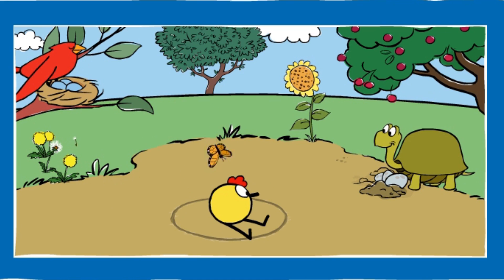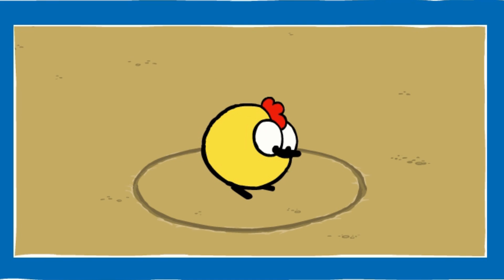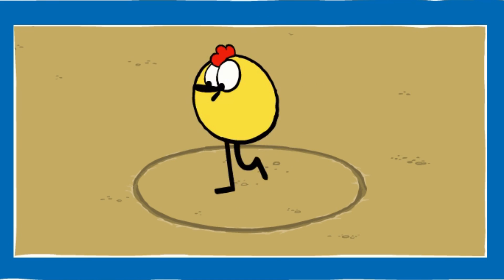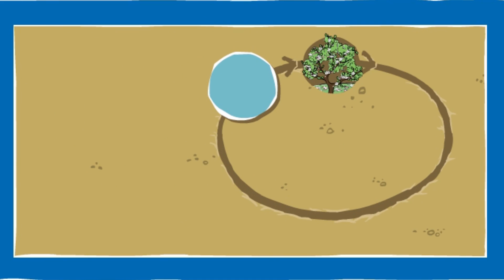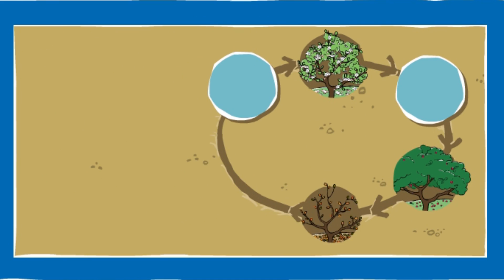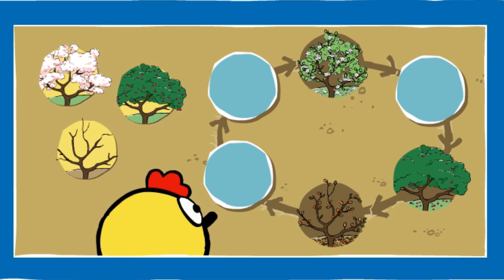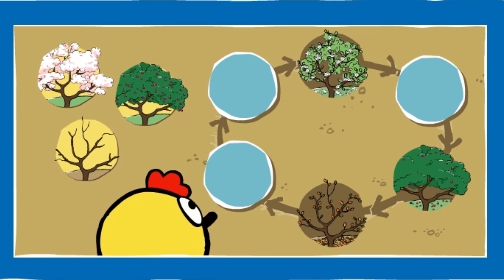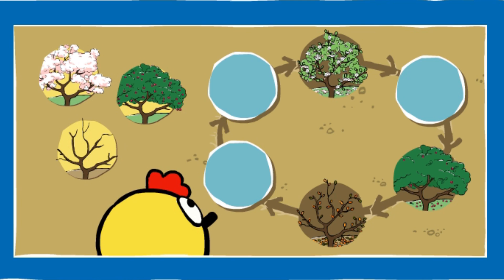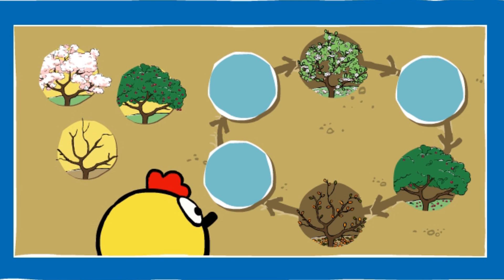Cherry tree! What about cherry trees? How do they change with the seasons? Help Peep put things in the right order. Drag the pictures onto the spots in the circle where you think they go. Think about what happens first and what happens next.